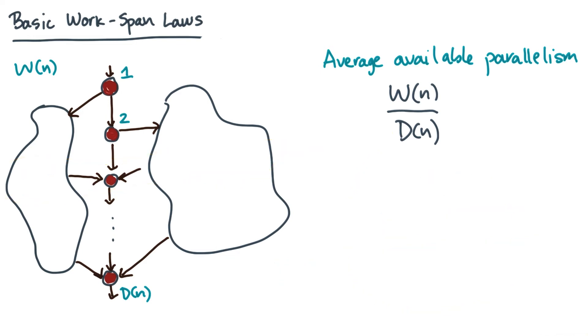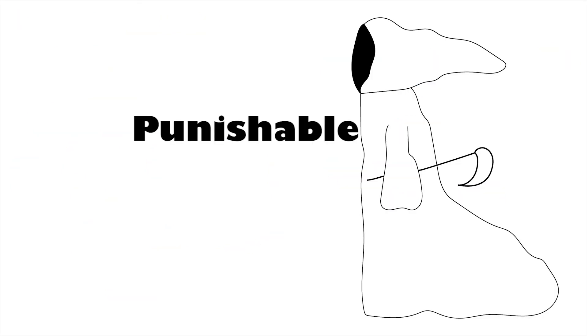Work and span give us some more information. For example, the span is a lower bound on the execution time. We're going to give this a special name — we're going to call it the span law, punishable by death.